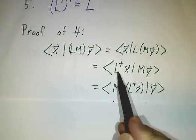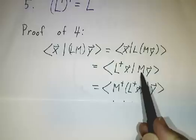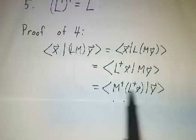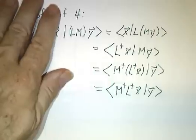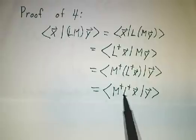And then we can move the M to the other side. M-dagger acting on L-dagger x has the same effect as M acting on y. So we get M-dagger acting on L-dagger x, and that's just M-dagger L-dagger acting on x.